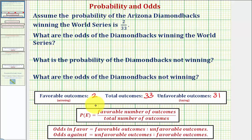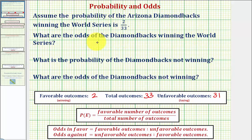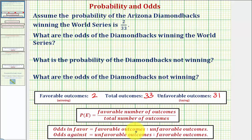This is all the information we need in order to answer these three questions. First, what are the odds of the Diamondbacks winning the World Series? This would be the odds in favor of the Diamondbacks winning. The odds in favor compares the number of favorable outcomes to the number of unfavorable outcomes, which looking at our information would be two to 31.